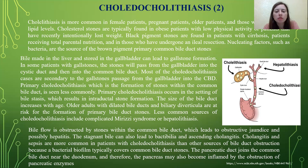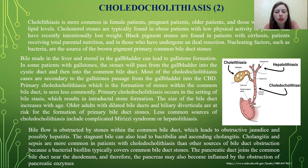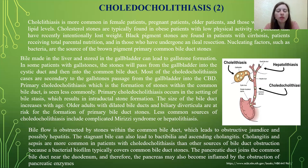Bile flow is obstructed by stones within the common bile duct, leading to obstructive jaundice and possibly hepatitis. Stagnant bile can also lead to bacterial colonization and ascending cholangitis. Cholangitis and sepsis are more common in patients with choledocholithiasis because a bacterial biofilm typically covers common bile duct stones. The pancreatic duct joins the common bile duct near the duodenum, so the pancreas may also become inflamed due to obstruction of pancreatic enzyme drainage.